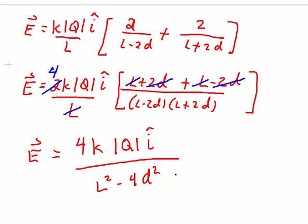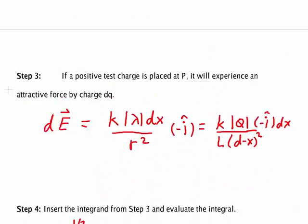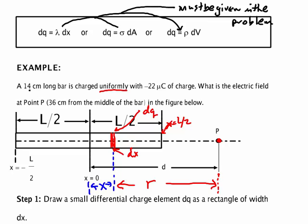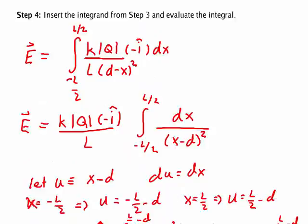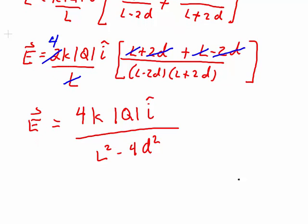Now you have all the numbers necessary to plug into this equation to get the final answer. You've got the total magnitude of q, k equals 9 times 10 to the 9th N·m²/C², the length of the bar, and the distance d. From the beginning of the problem: l is 0.14 meters — remember to use meters, not centimeters — minus 22 microcoulombs is minus 2.2 times 10 to the minus 5 coulombs, and d is 0.36 meters. Because d is bigger than l, you'll get a negative out of the denominator, so the direction of the electric field is in the negative i-hat direction, which makes sense — it's attractive.